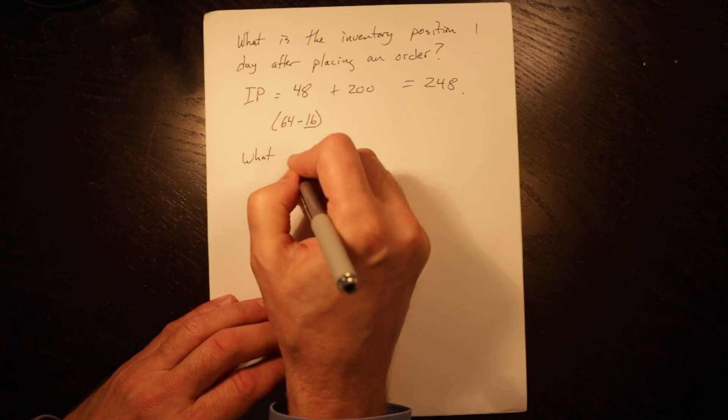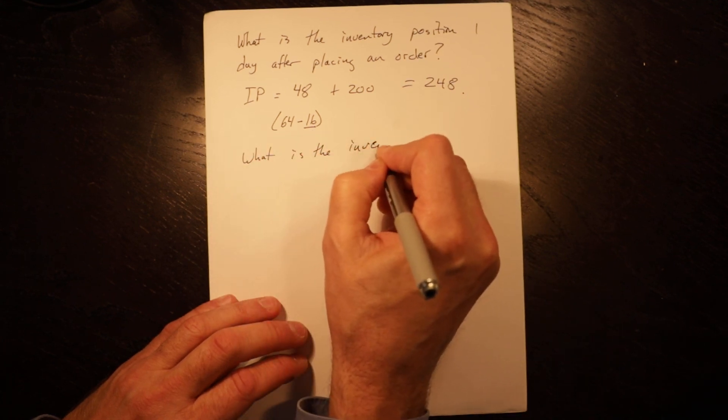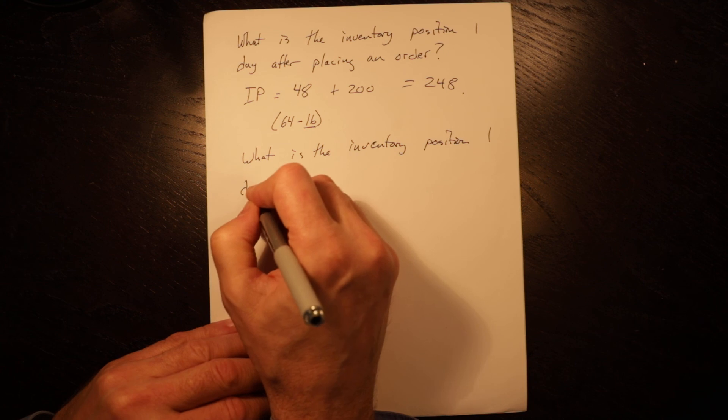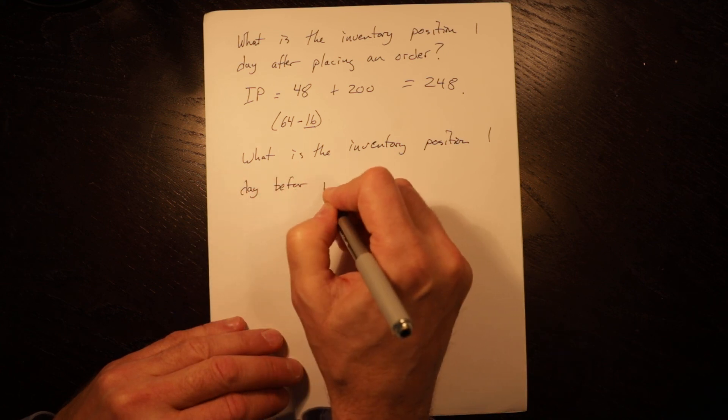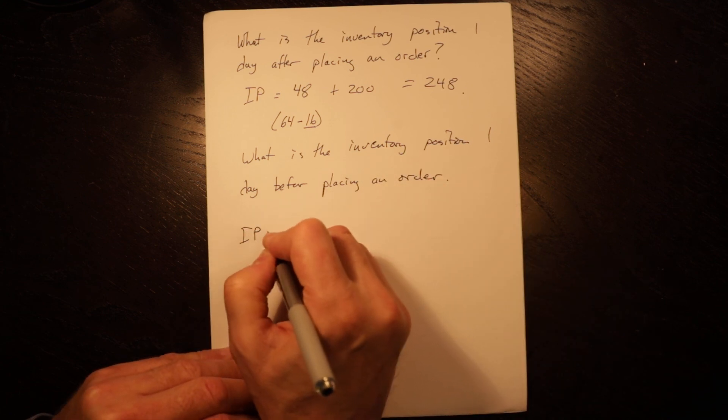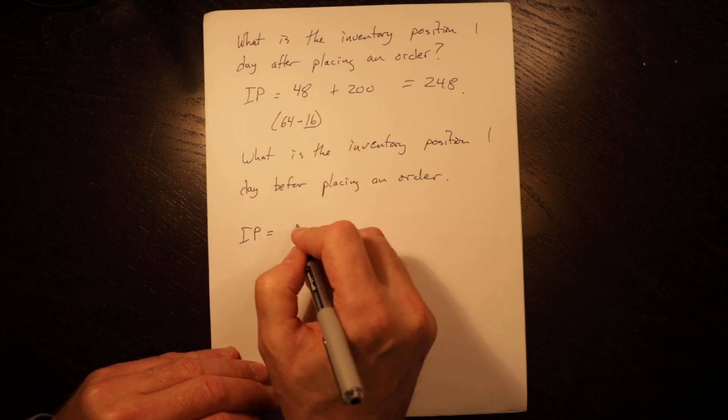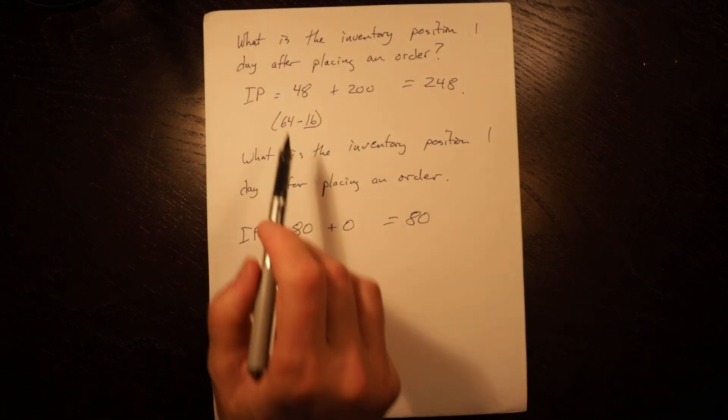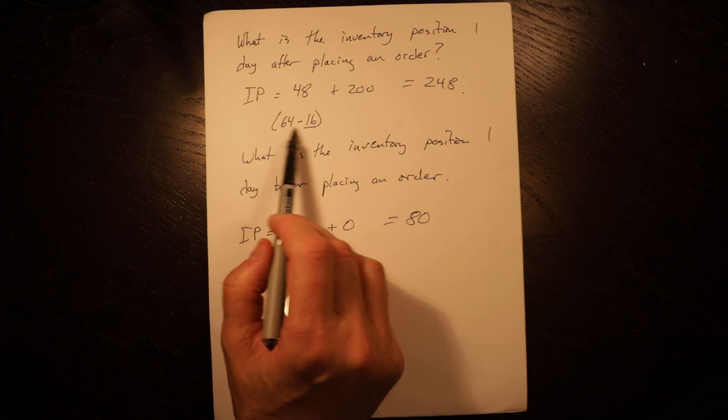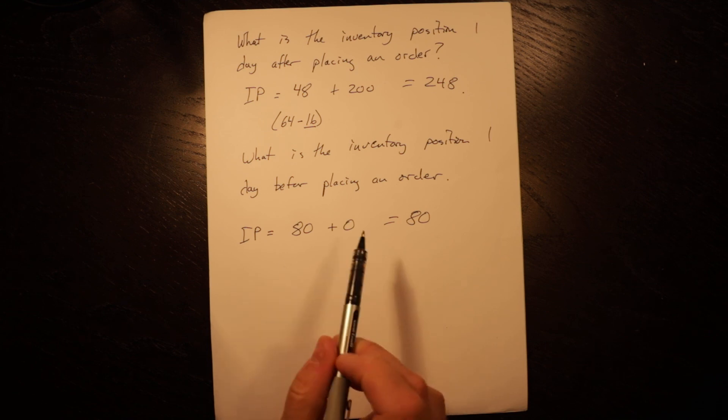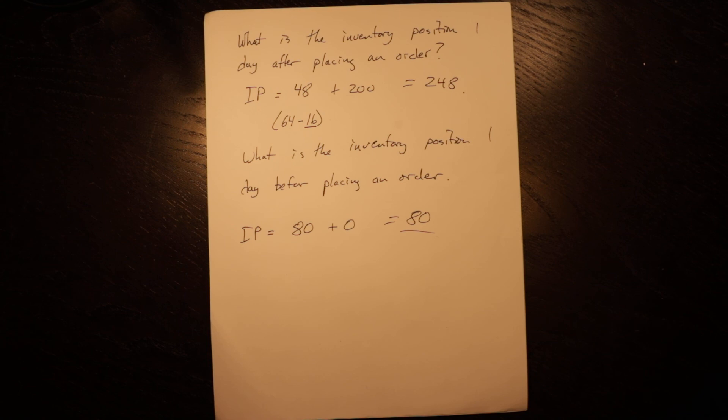And if I ask you similarly, what is the inventory position one day before placing an order? It would be 64 plus 16, which gives me 80. I won't have an order outstanding because an order will have already arrived and I don't place one until the next day. So in that case, the inventory position is 80.